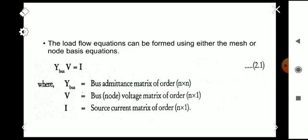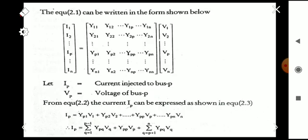We will mainly be adopting the nodal voltage analysis. The node-based matrix equation is Y-bus into V equals I, where Y-bus is the bus admittance matrix of order n×n, V is the bus (node) voltage matrix of order n×1, and I is the source current matrix of order n×1. The corresponding equation can be written as I1, I2, up to In, and we are also considering a term Ip for analysis purposes.